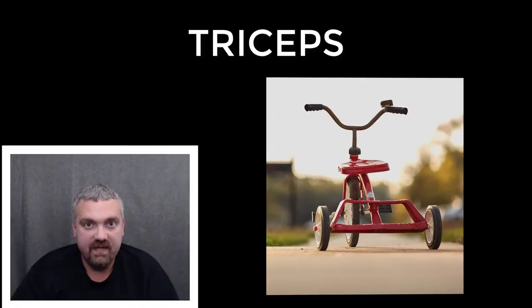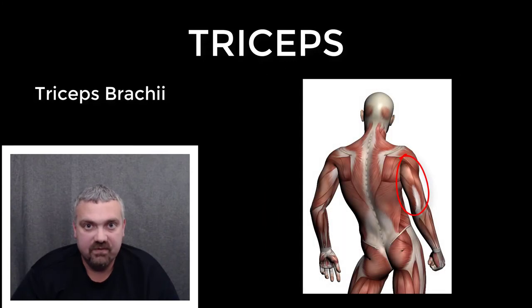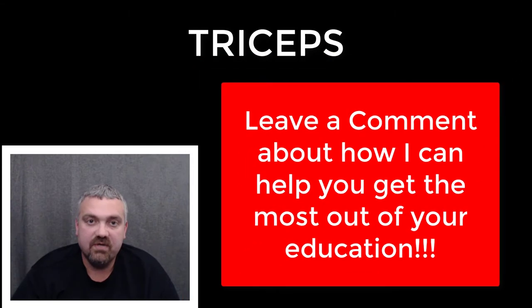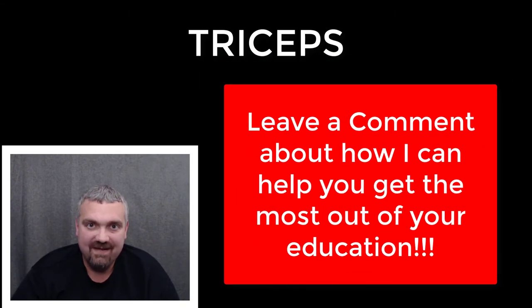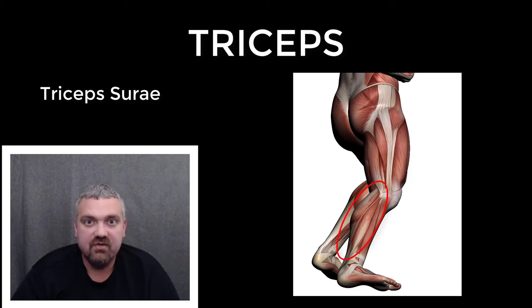Next, we have triceps. Tri means three, so the triceps brachii muscle is going to have three heads. You may also see this term used when talking about the triceps surae, which is really not a term that's used much anymore. It is a muscle group — a combination of three muscles that control the movement of your calf, your lower leg.